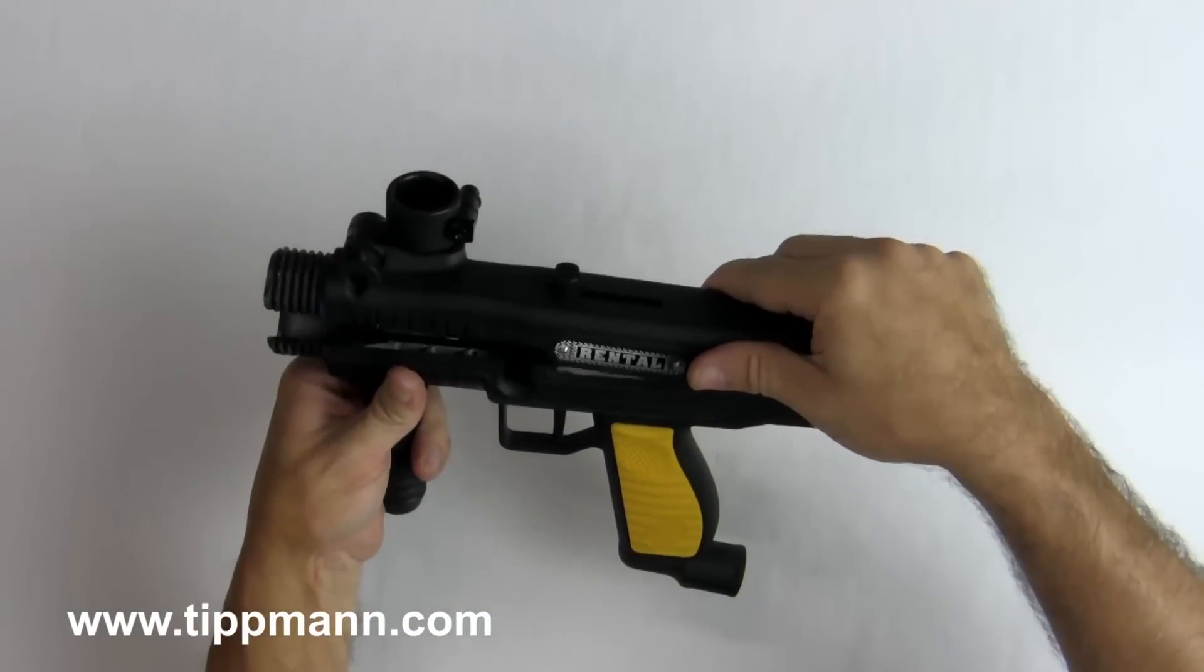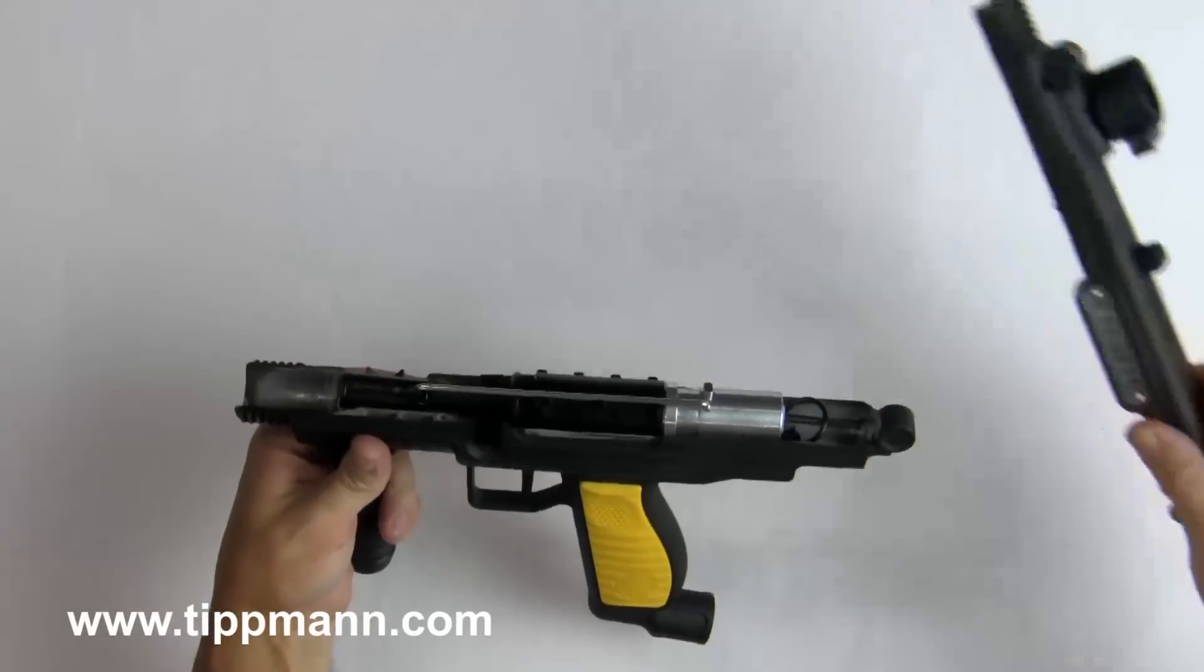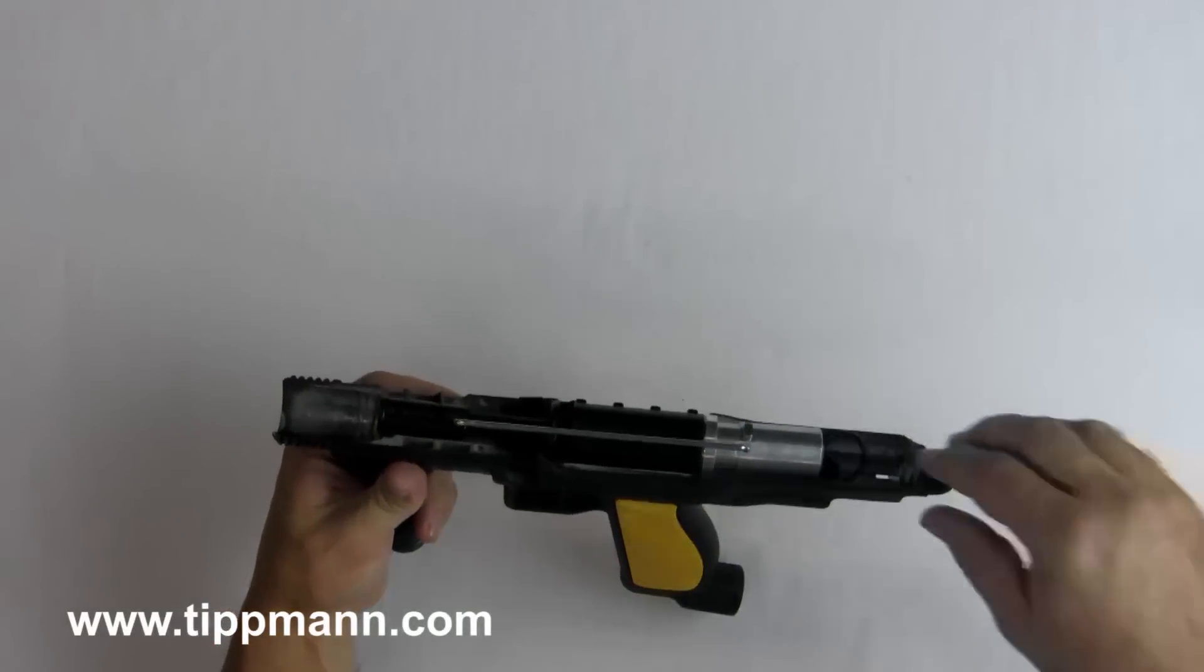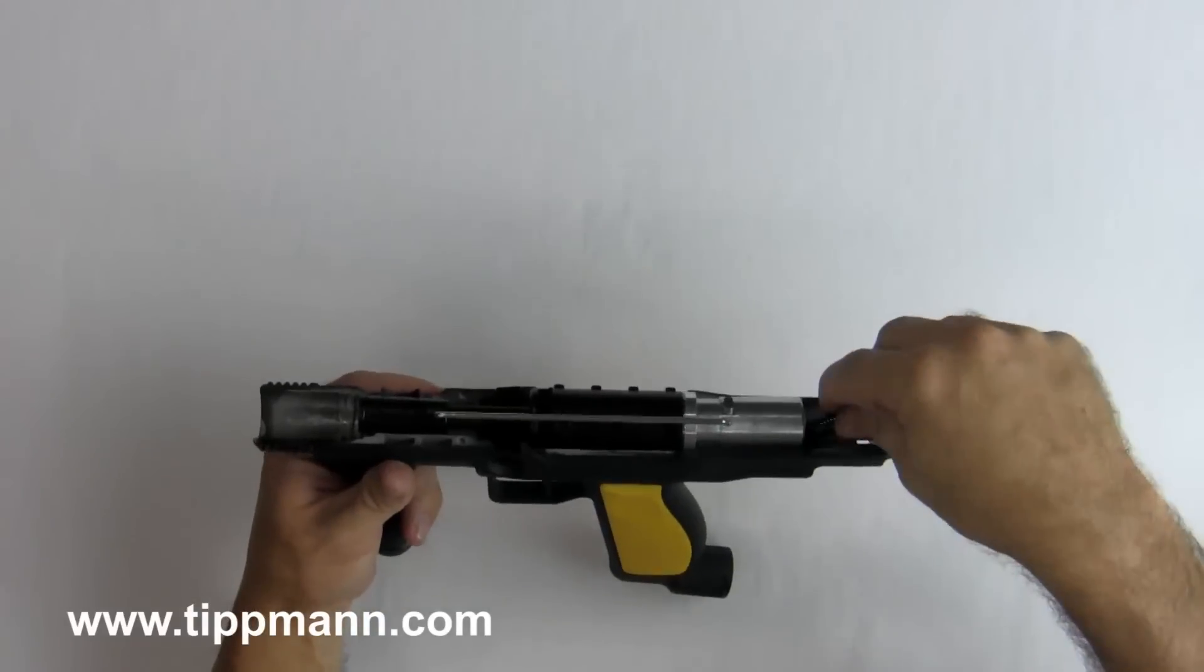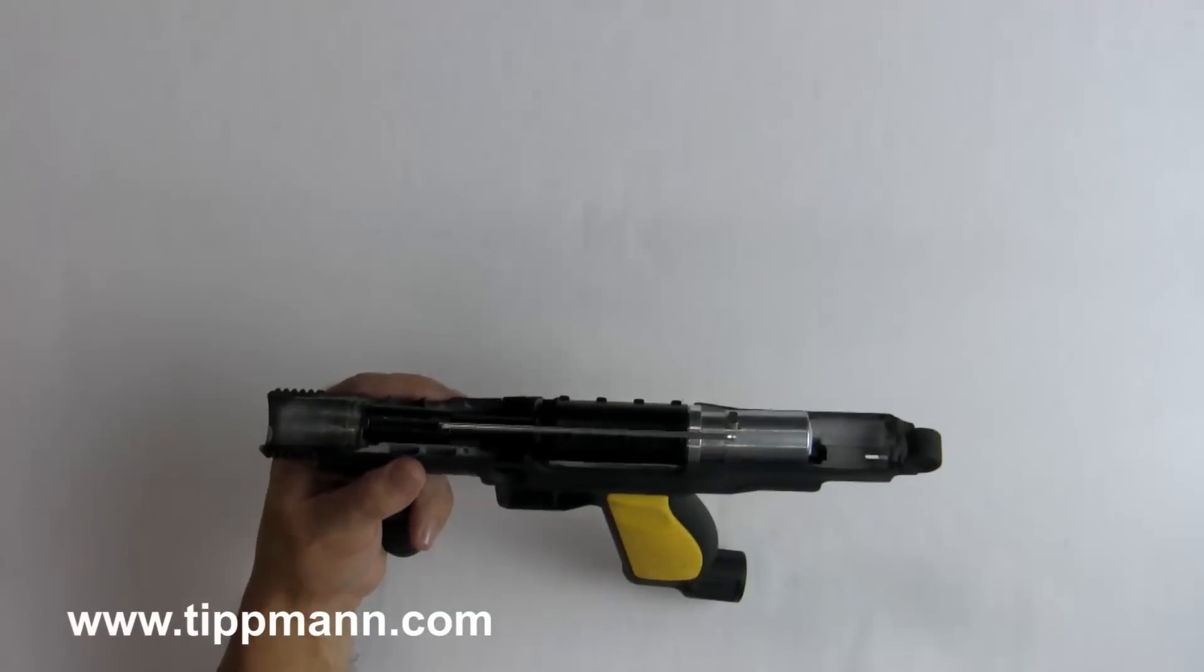Once that's removed you can lift off the top of the receiver. Now we want to remove the internals, so we'll take the drive spring, guide pin, buffer o-ring, and set that aside.